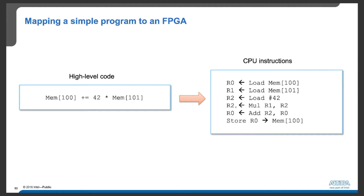The next step is to perform addition of R2 with R0 and put the sum into register R0. And finally, we store the result from R0 into memory location 100.